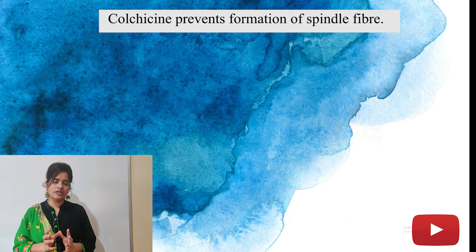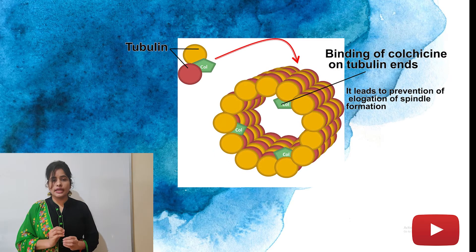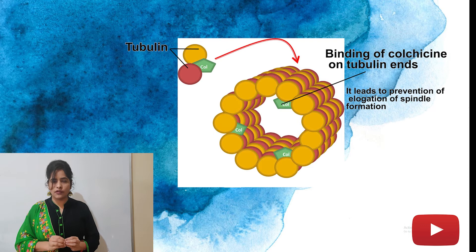And student, this complex is not reversible. Joh colchicine hai, ye microtubules ke ek end per ja kar bind kar leega aur ek complex form kar ega. Jis ki wajay se it leads to prevent spindle fiber formation.